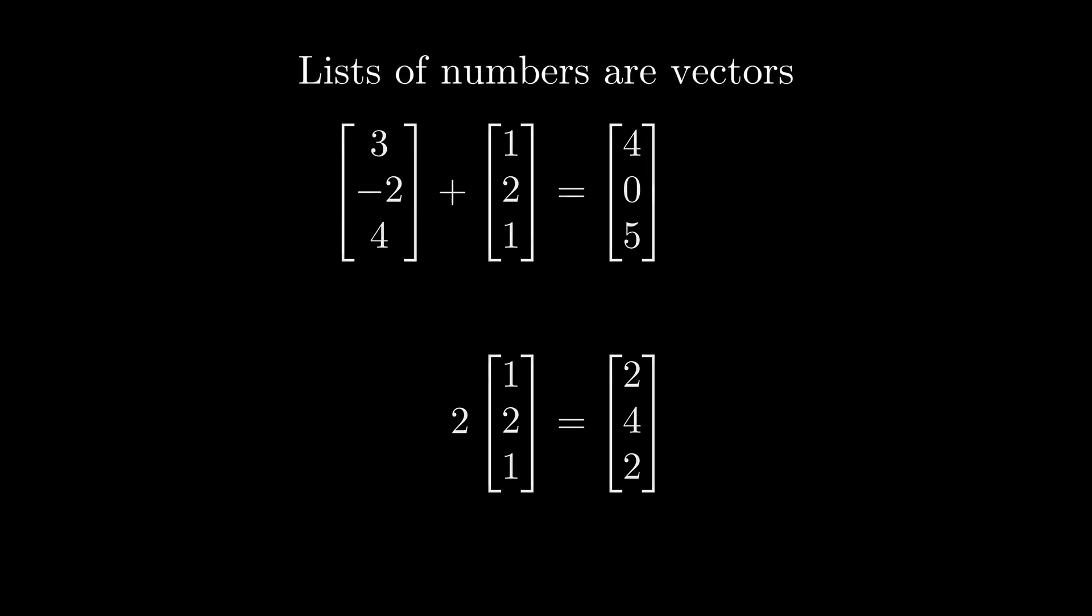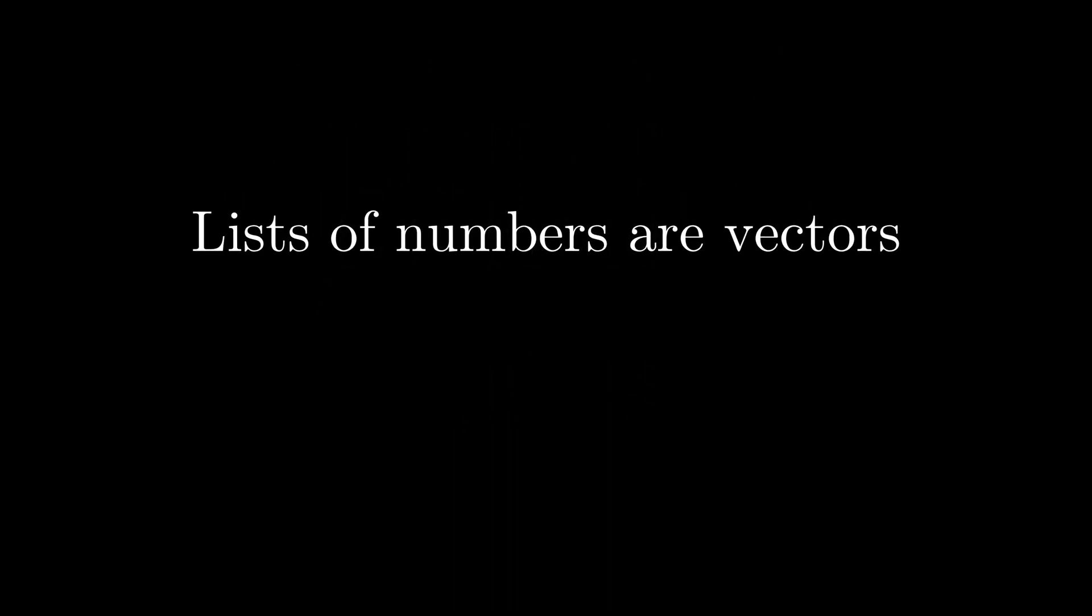Hey wait, didn't I say that vectors are not lists of numbers? That's the title of the video! But notice that I'm saying that lists of numbers are vectors, not that vectors are lists of numbers. It's still true that vectors are not lists of numbers. What we see is that lists of numbers are just one particular example of vectors among many. It's similar to how 3 being a number doesn't mean that every number is equal to 3. Thus, saying that vectors are lists of numbers is wrong because there are many things that are vectors that are not lists of numbers.